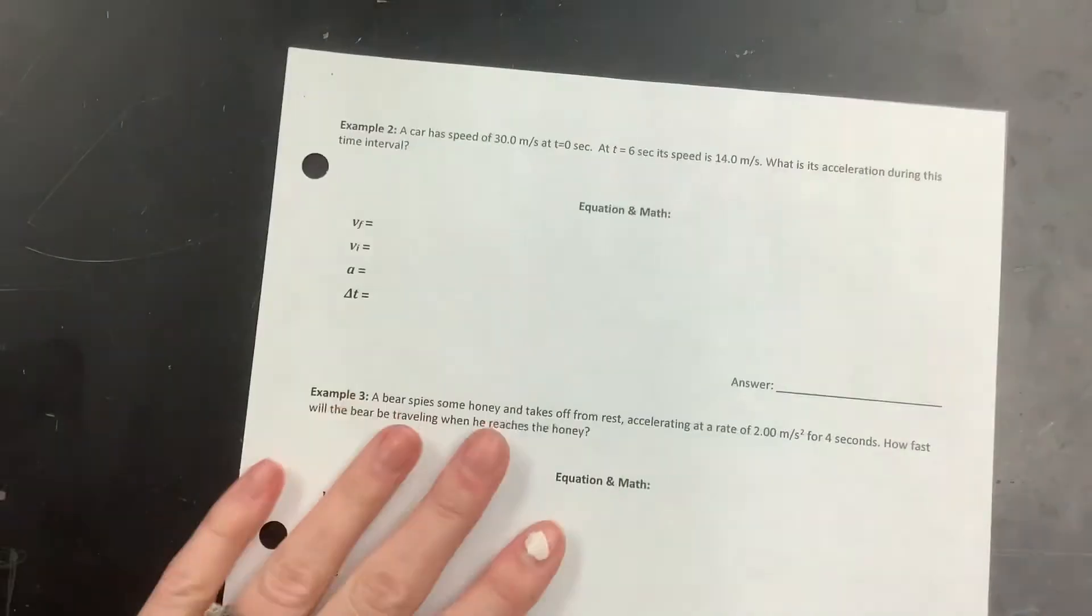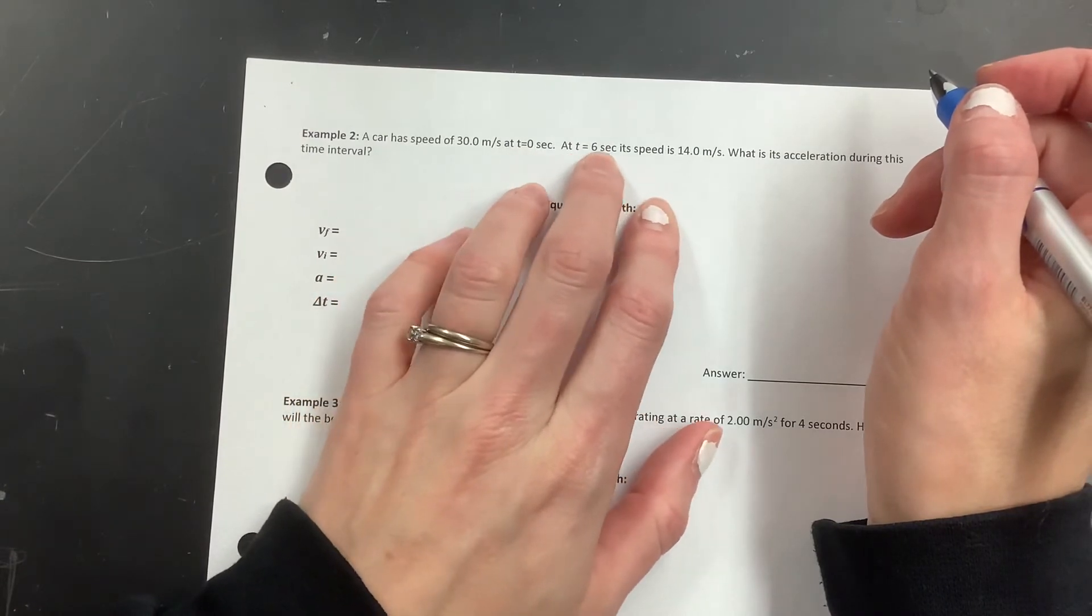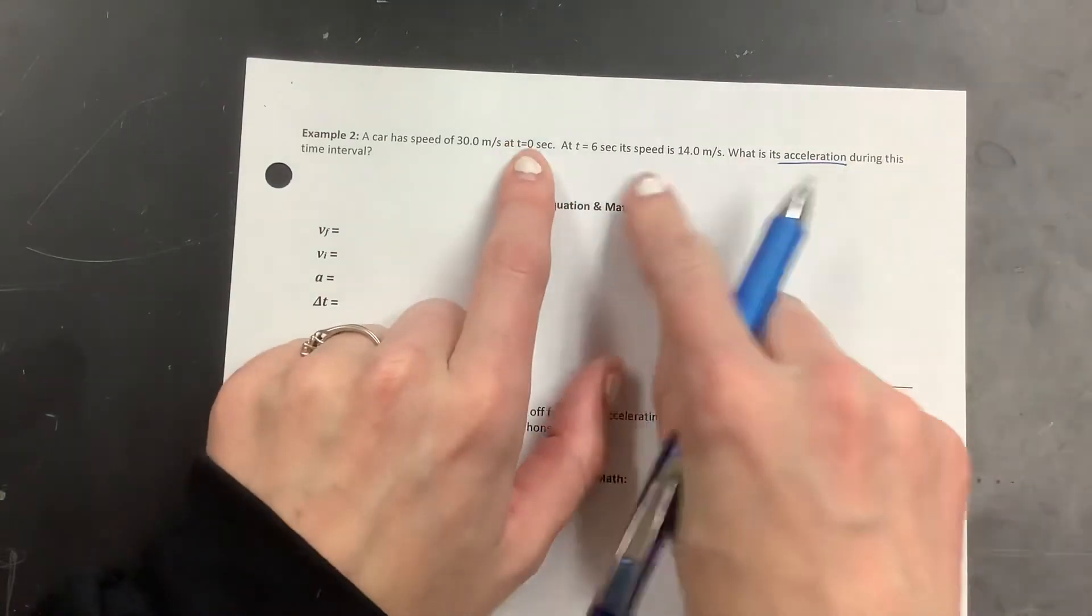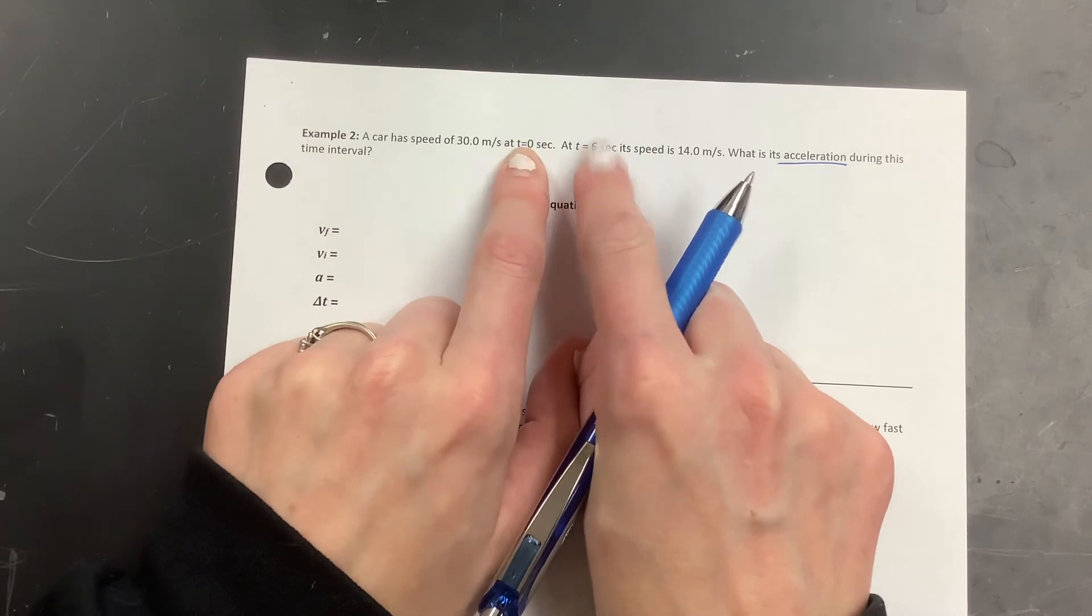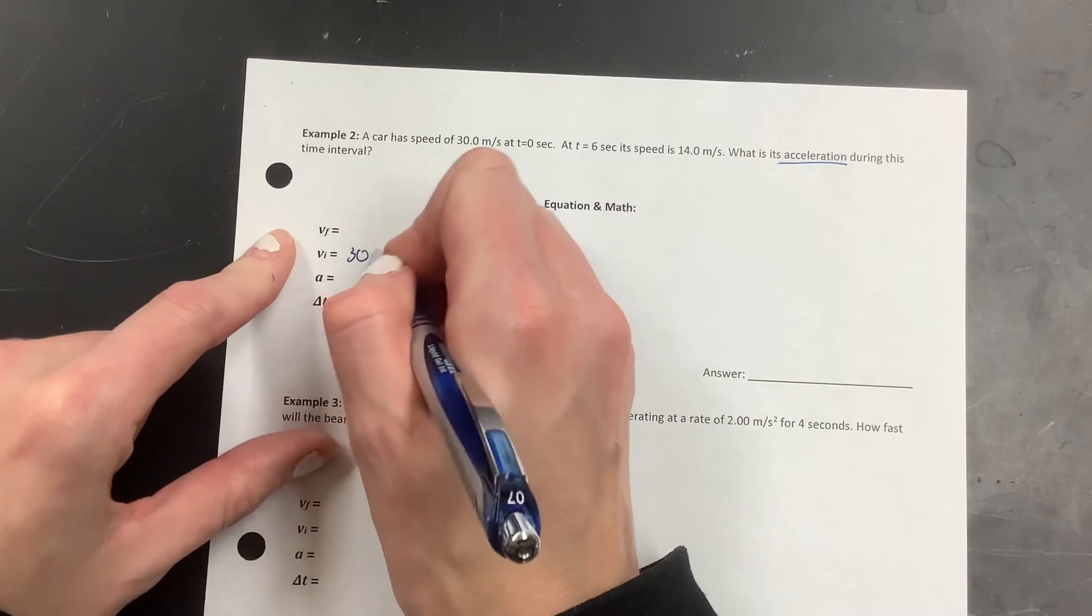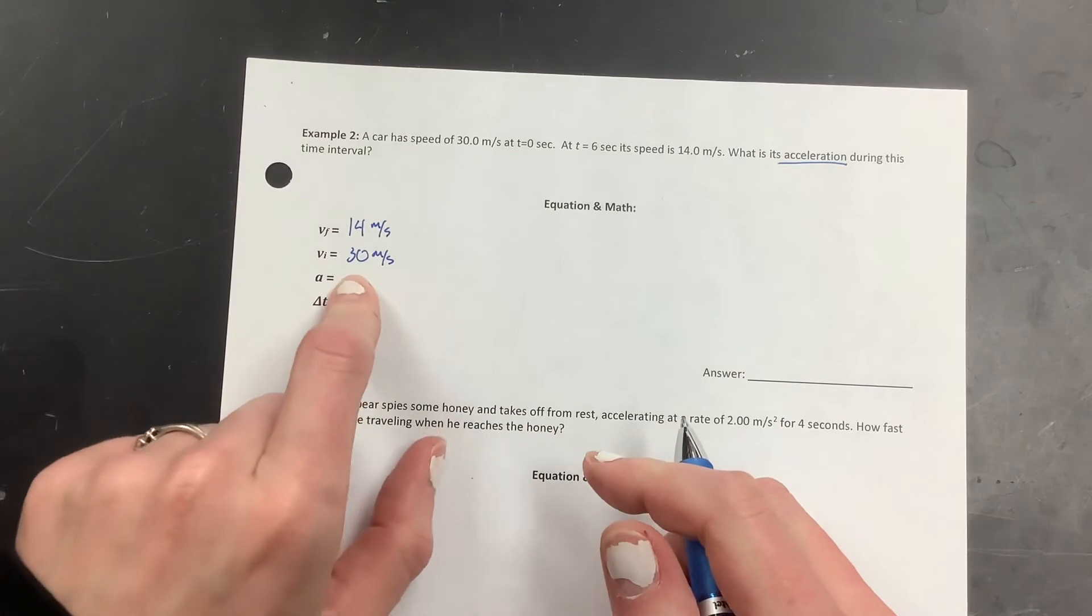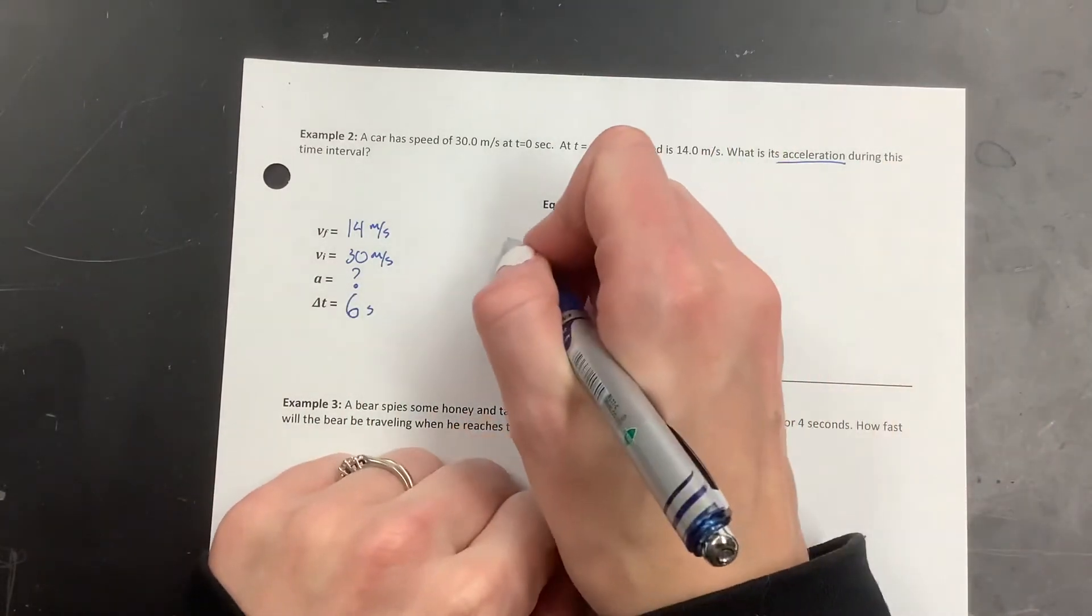All right, next example is on this other page that I have here. A car has a speed of 30 meters per second at t equals 0, and at t equals 6 seconds, its speed is 14. What is its acceleration? So we've got 0 to 6 here. So let's see, this one must be the initial because this one's later. That time is 6 seconds. The initial is 30 meters per second, and the final is 14 meters per second. What is this object doing? If it's going from 30 to 14, it's slowing down. So my acceleration ought to be negative. I've got to make sure that happens.